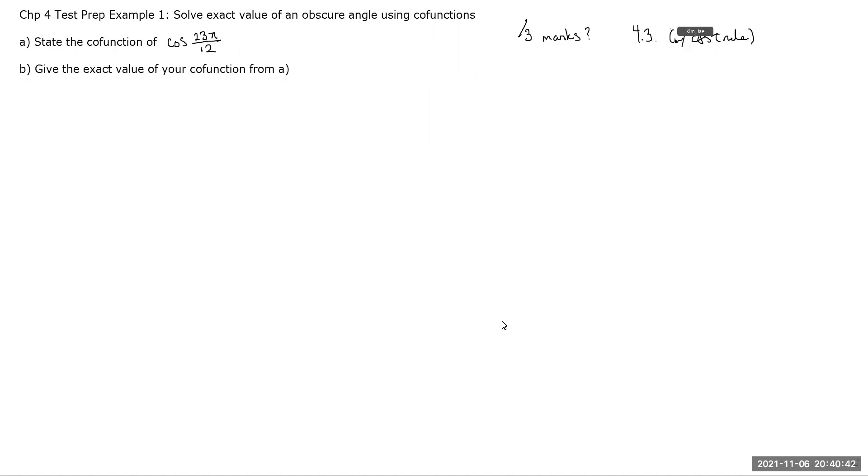try it on your own and then I'll take it up together. This particular question, you'll see soon, but I will title it as solving for the exact value of ratios that give an obscure angle, so that are not 30 degrees, 45 degrees, or 60 degrees, using,